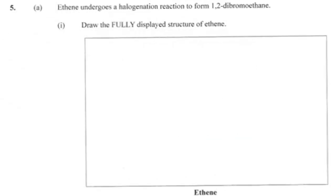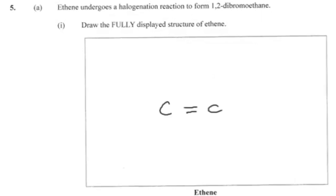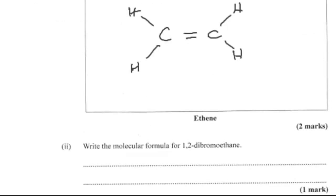Number five, part one of eight: the question shows a halogenation reaction to form 1,2-dibromoethane. We need to draw the fully displayed structure of ethene, and also state the molecular formula for 1,2-dibromoethane.